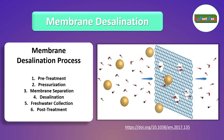I will discuss about the fouling in a later slide. Then coming to pressurization, the pre-treated saline water is then pressurized using a pump. This pressure is applied to overcome the natural osmotic pressure and force water molecules to pass through the semi-permeable RO membrane.